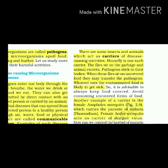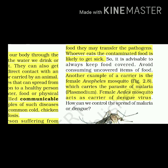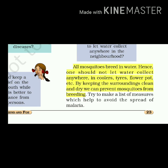Avoid consuming uncovered items of food. Another example of a carrier is the female Anopheles mosquito, which carries the parasite of malaria - Plasmodium. Female Aedes mosquito acts as carrier of dengue virus. All mosquitoes breed in water. Hence, one should not let water collect anywhere in coolers, tires, flower pots, etc. By keeping the surroundings clean and dry, we can prevent mosquitoes from breeding.